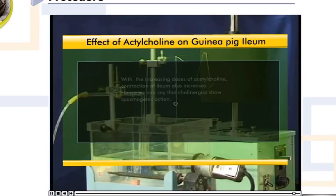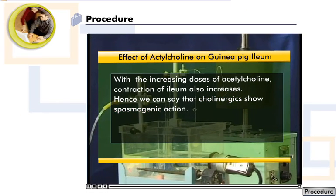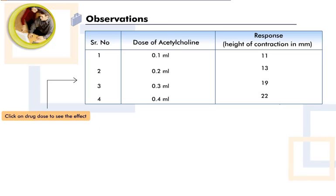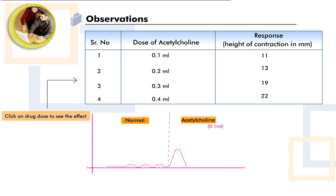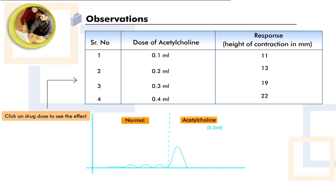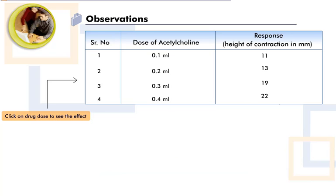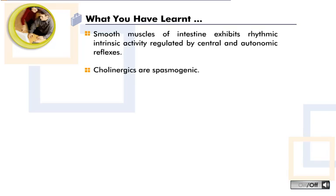Hence, we can say that cholinergics show spasmogenic action. You have learnt that smooth muscles of the intestine exhibit rhythmic intrinsic activity regulated by central and autonomic reflexes. Cholinergics are spasmogenic.